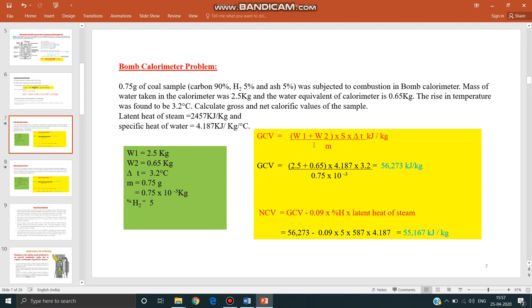Now substitute all the data in the formula. Always you have to write the formula first then give the substitution. So you will get GCV. NCV will be calculated from GCV, that is GCV minus 0.09 times percentage of hydrogen times latent heat of steam. Latent heat of steam in SI unit is 2457. So you will get this value.